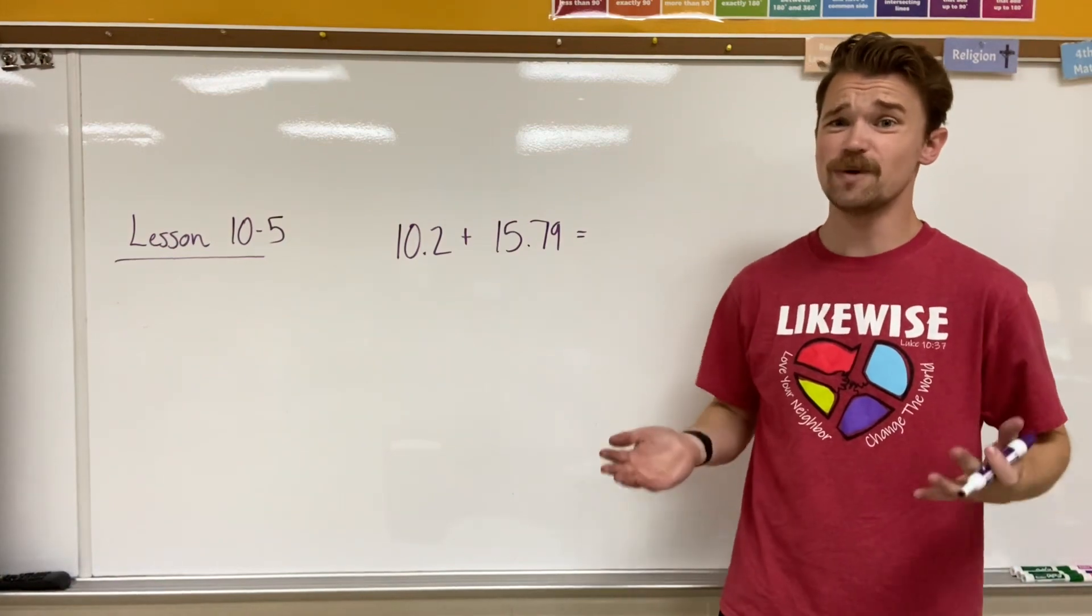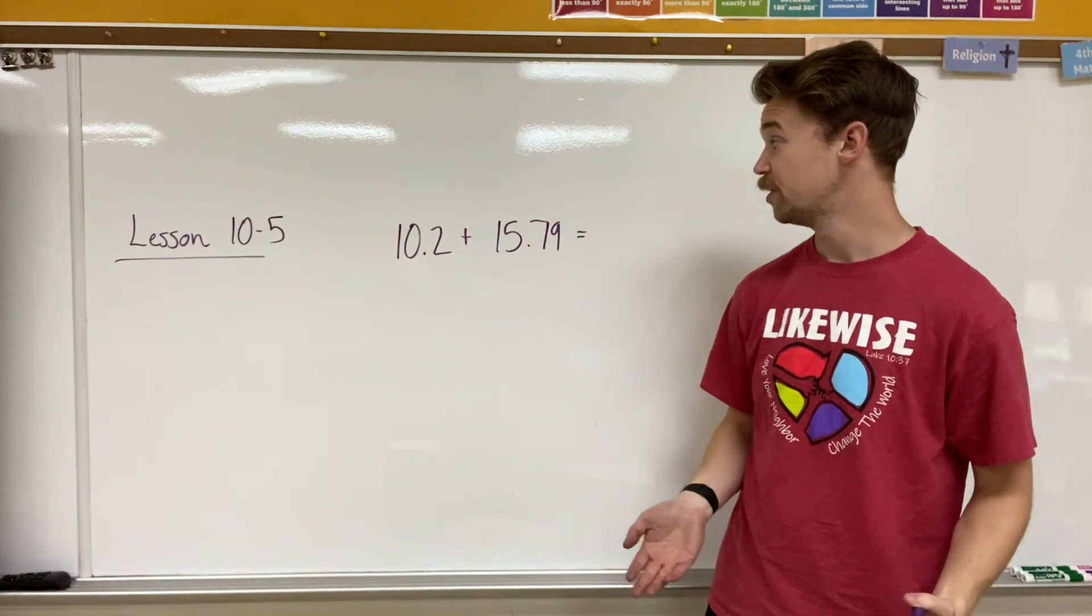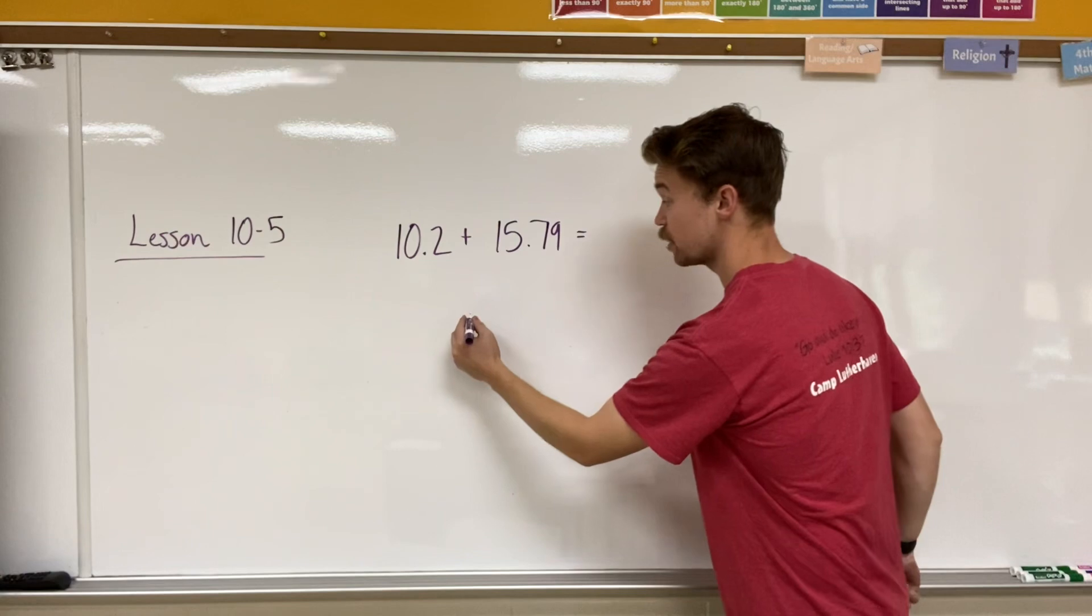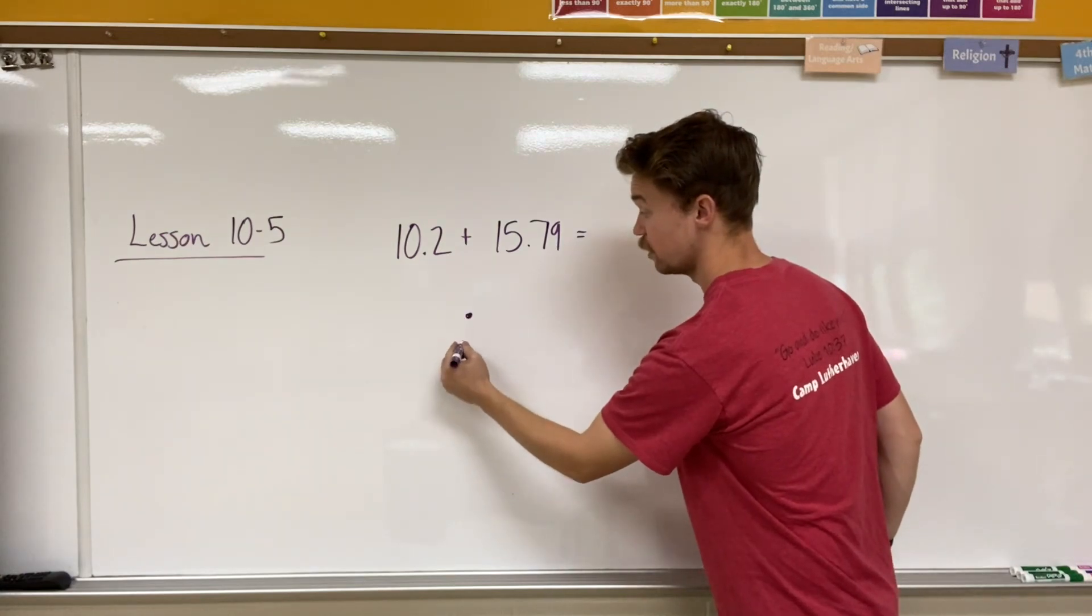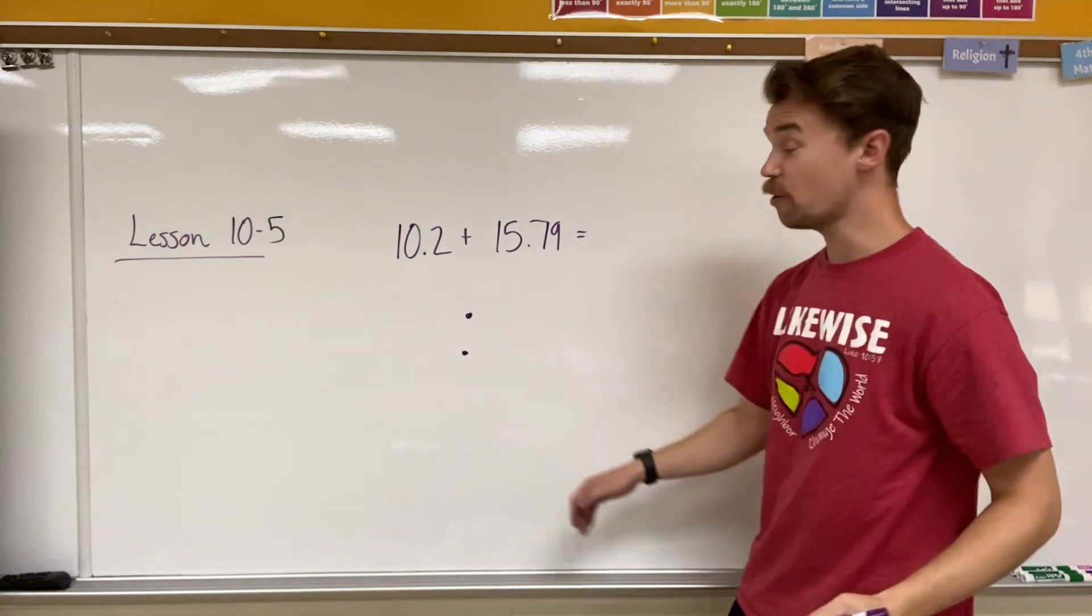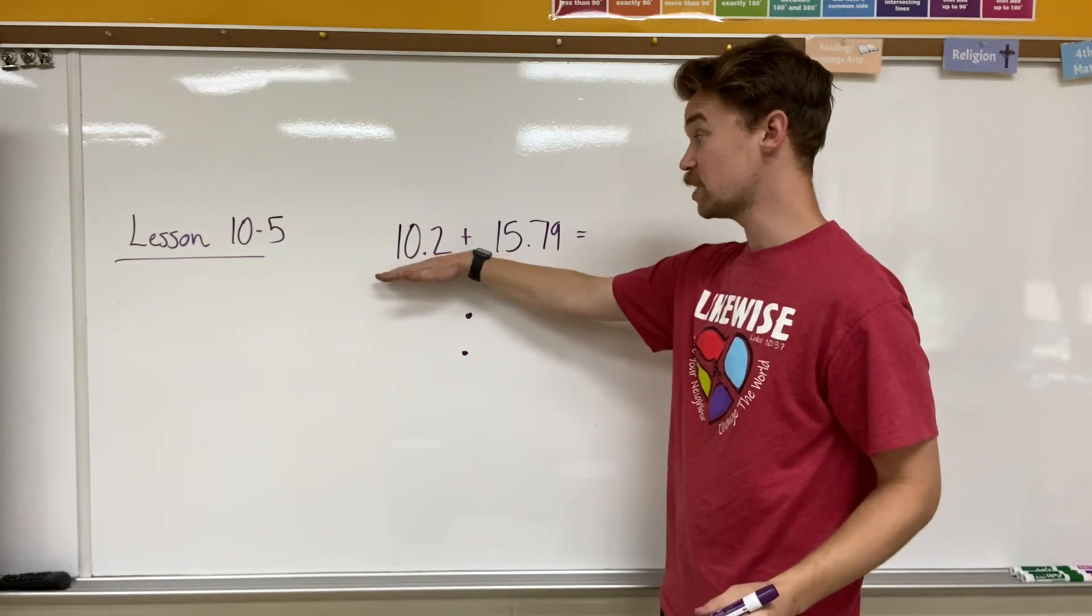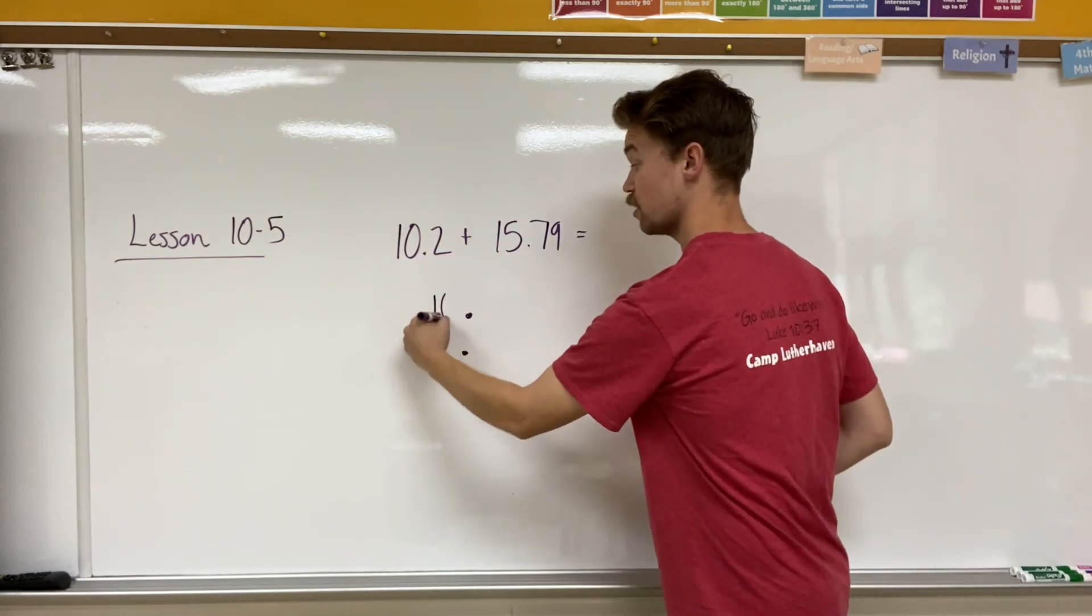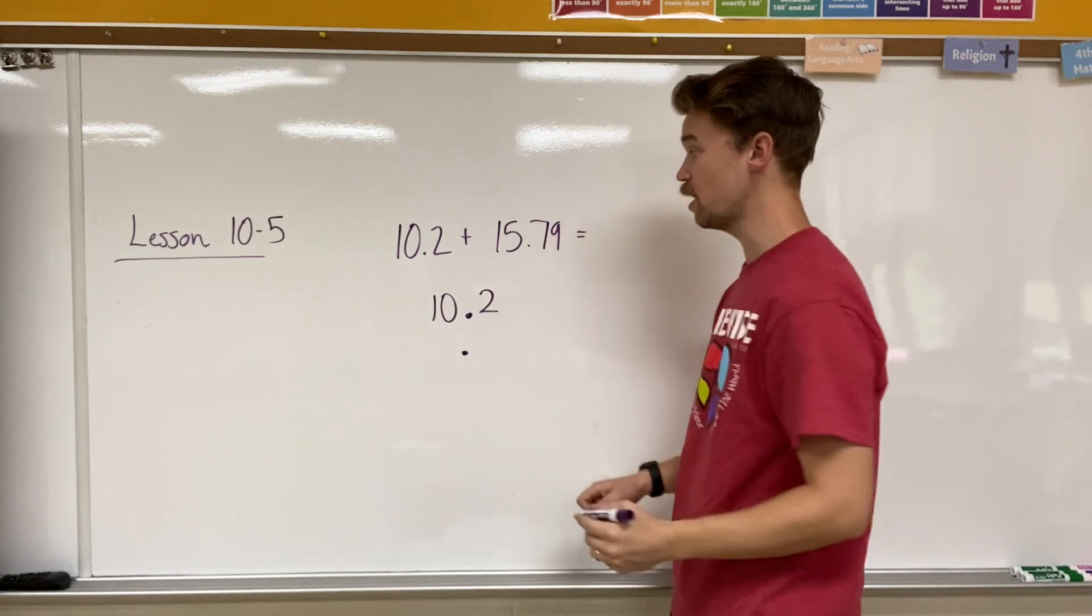Now on your homework they're going to ask you to align and then add. Well my trick for that is to make sure that I have my decimal places first, and I'm going to be going number by number. So in this number I have 10.2. Ten is on one side of the decimal place and two tenths is on the other.